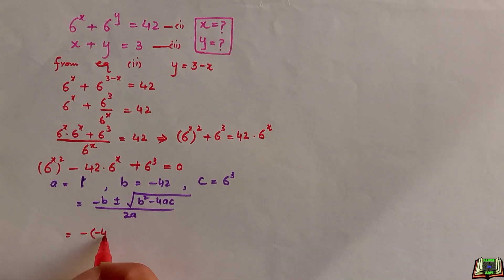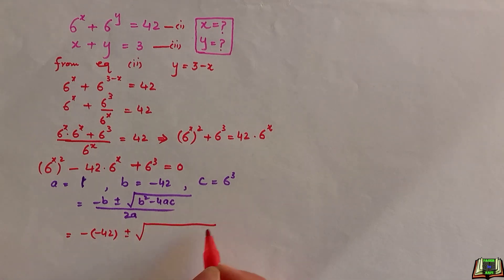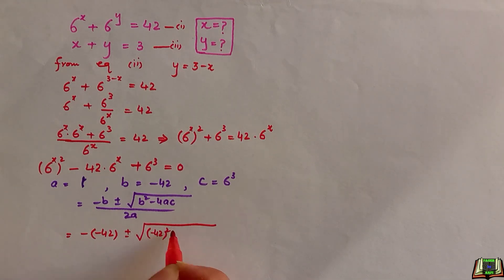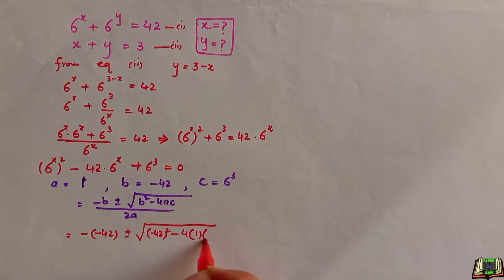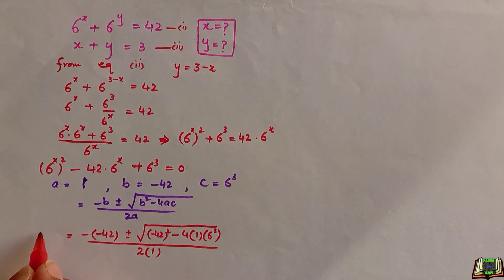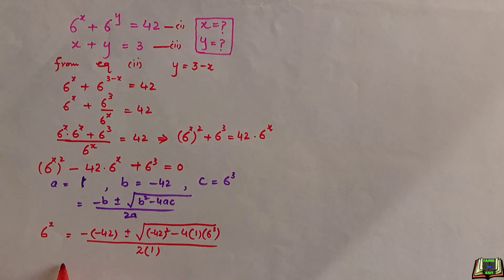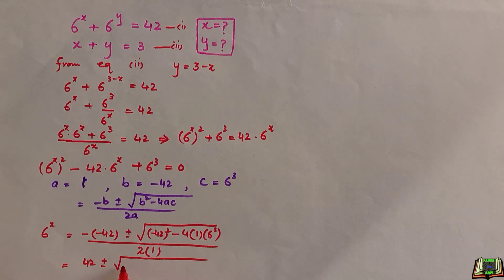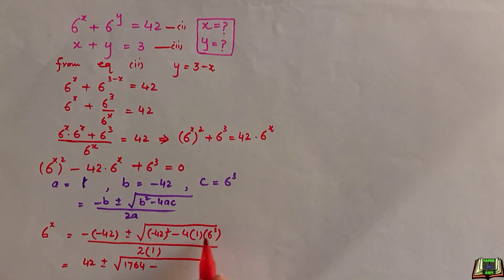So 6 to the power x equals 42 plus or minus the square root of: (minus 42) squared minus 4 times 1 times 6 to the power 3, all divided by 2 times 1. Now 42 squared is 1764, and 6 to the power 3 is 216; times 4 gives 864. So we have the square root of (1764 minus 864) divided by 2.